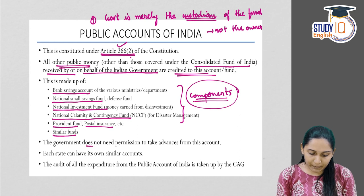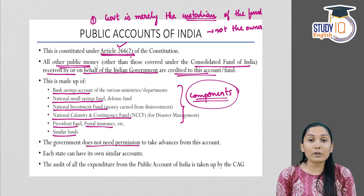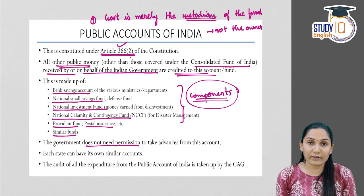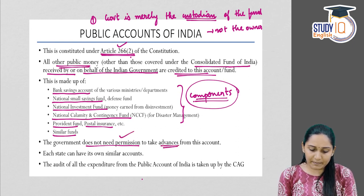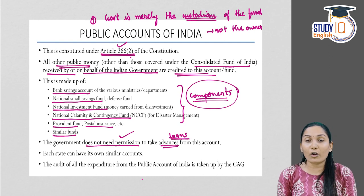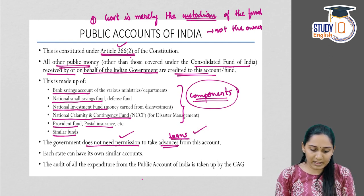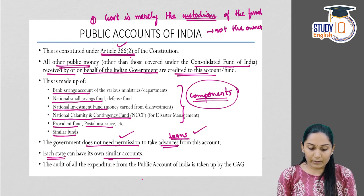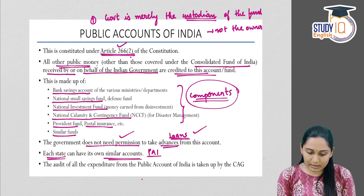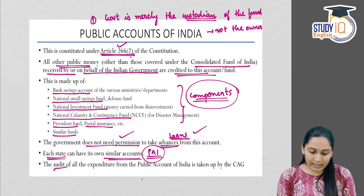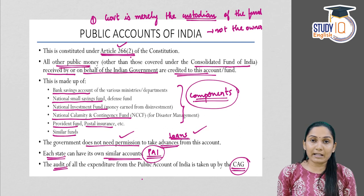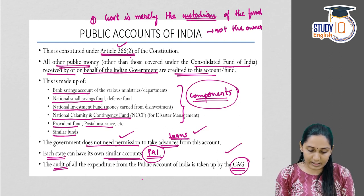The government does not need permission from Parliament or any other body to take advances from this account. Since the government is only the custodian and not the owner, it has to borrow money from this fund — hence it is called advances or loans. Each state has its own similar public accounts. The audit of expenditure from Public Accounts of India is also carried out by the CAG.